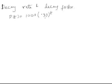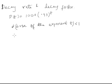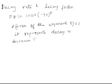This value 0.93 is less than 1, so this population model represents decay or decrease in population. Whenever the base of the exponent t is less than 1, it represents decay or decrease in population. This applies to decay of any substance — carbon dating can also be done using this procedure.